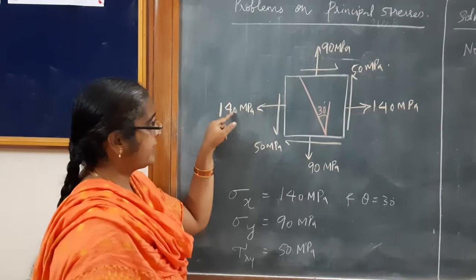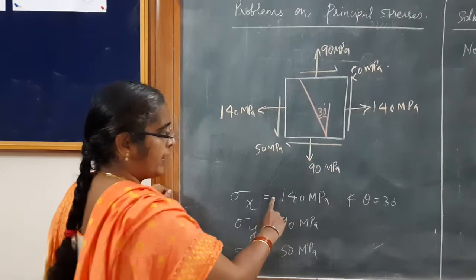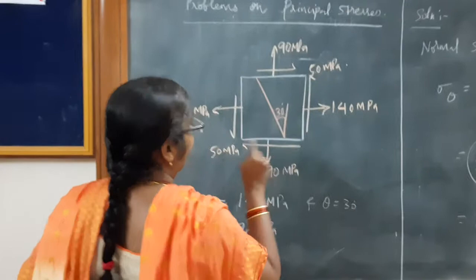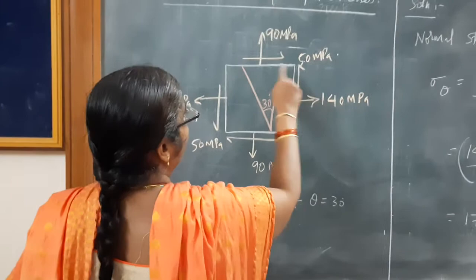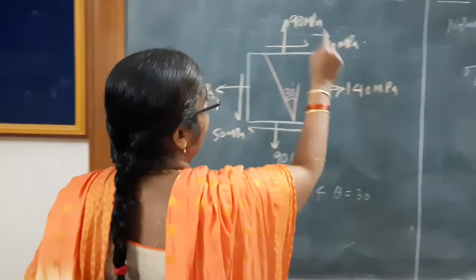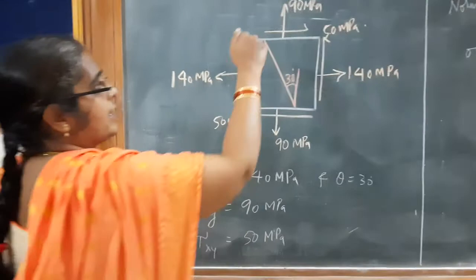One is 140 MPa along the x-axis, so sigma x is 140 MPa. Since it is tensile the sign is positive. It is also subjected to another stress 90 MPa in the y-direction, so sigma y is equal to 90 MPa. It is also subjected to shear stress — it is a biaxial stress along with shear. The shear stress is given as 50 MPa.